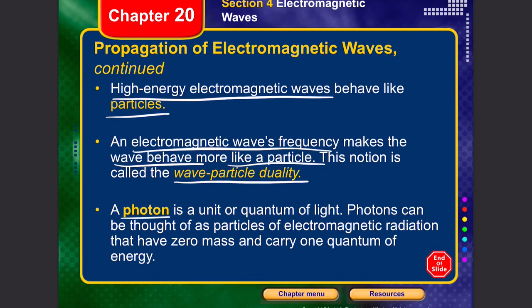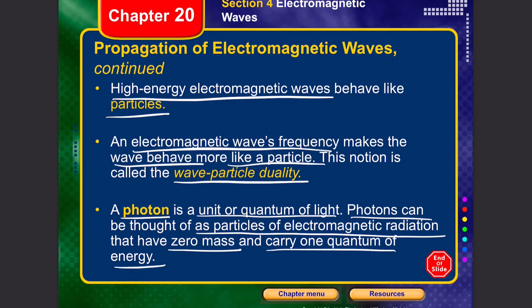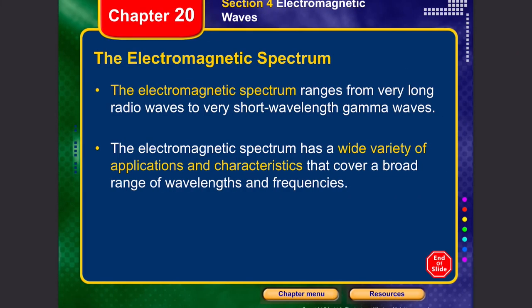Einstein was the first to explain wave-particle duality, naming the particle a photon. A photon is a unit or quantum of light — a particle of electromagnetic radiation with zero mass that carries one quantum of energy. That energy is given by Planck's law, which will be discussed in the next chapter.